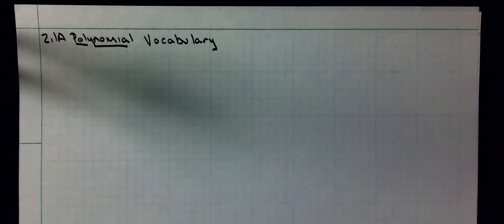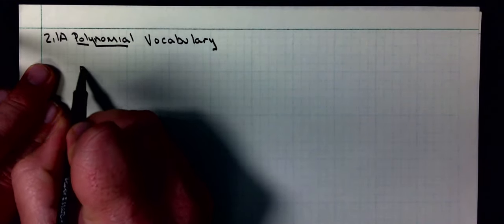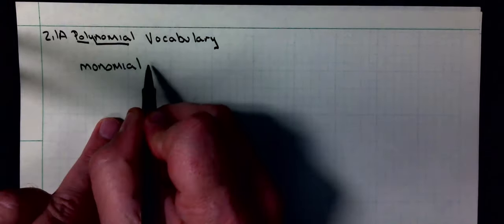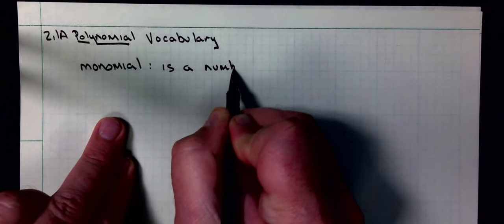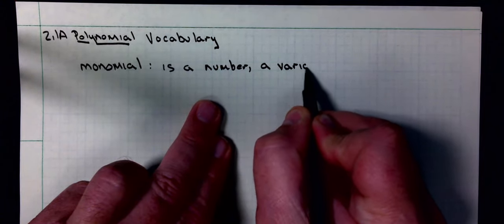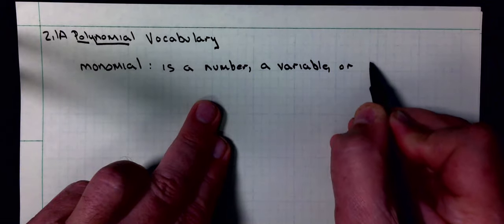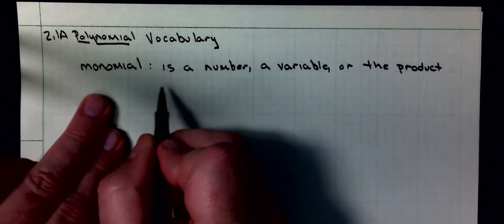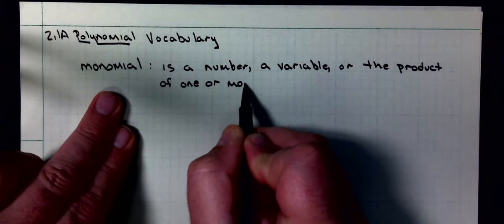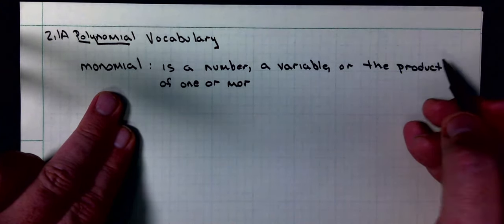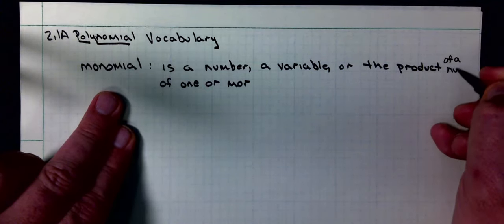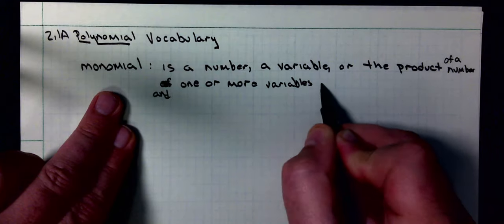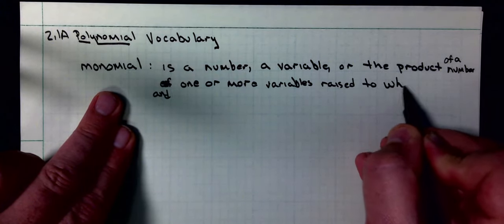So poly means many. We're going to figure out what a monomial is. A monomial is a number, a variable, or the product of one or more variables, the product of a number and one or more variables.